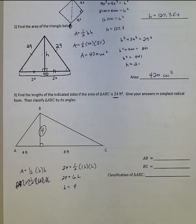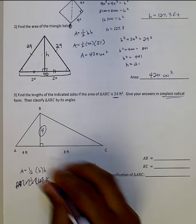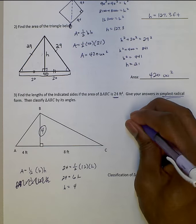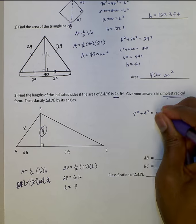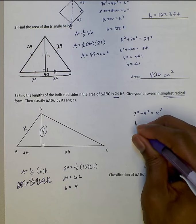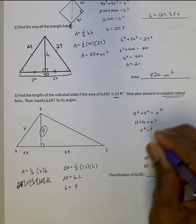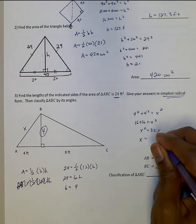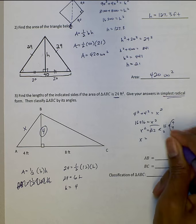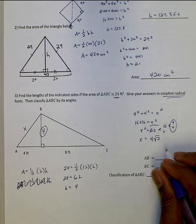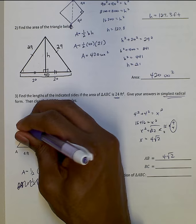Now it asks us to find AB, which we can find in the simplest radical form by using Pythagorean's Theorem, which will say 4 squared plus 4 squared equals X squared. 16 plus 16 equals X squared. X squared equals 32. Take the square root of that. X will equal 16 times 2 or 4 and 4. 4 radical 2. So AB is 4 radical 2.